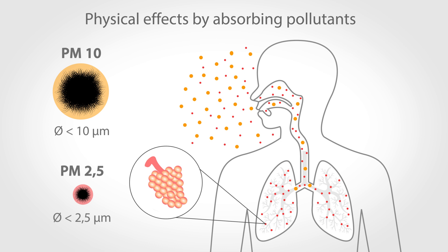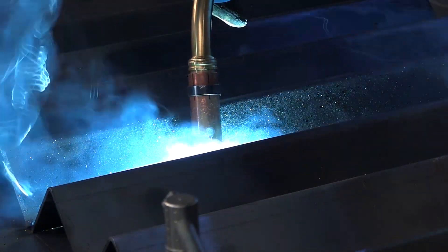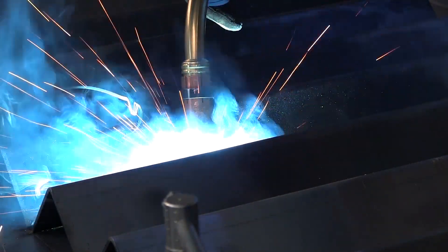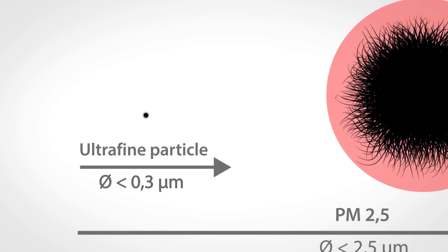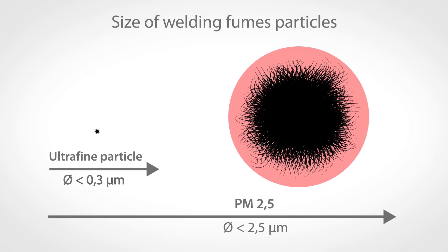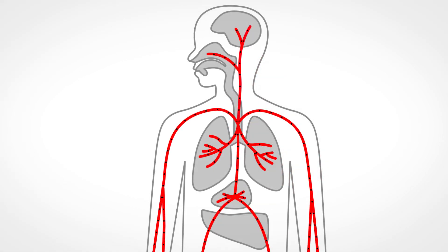Finer particles which are smaller than 2.5 microns are thus PM2.5 and can reach the alveoli or air sacs. Most fine dust particles, however, are even smaller than that. Welding fumes, for example, consist mainly of ultra-fine particles which are smaller than 0.3 microns. The smaller a particle, the further it can penetrate the body. Ultra-fine particles will reach the bloodstream via the air sacs and are thus harmful for all organs in the human body.